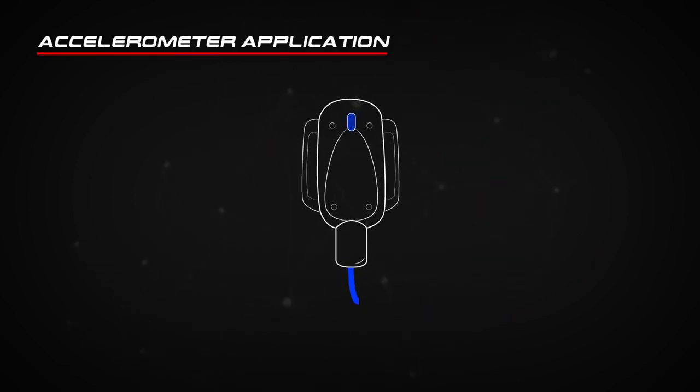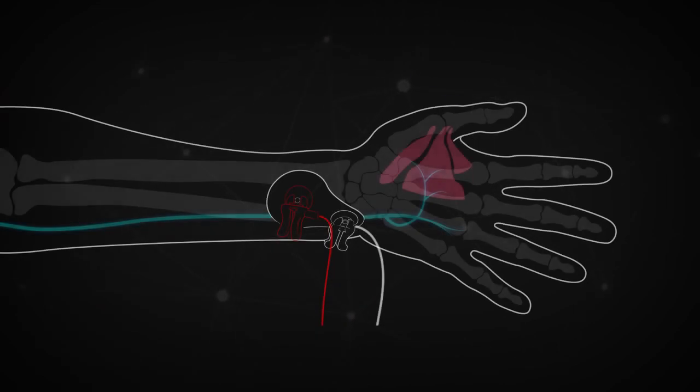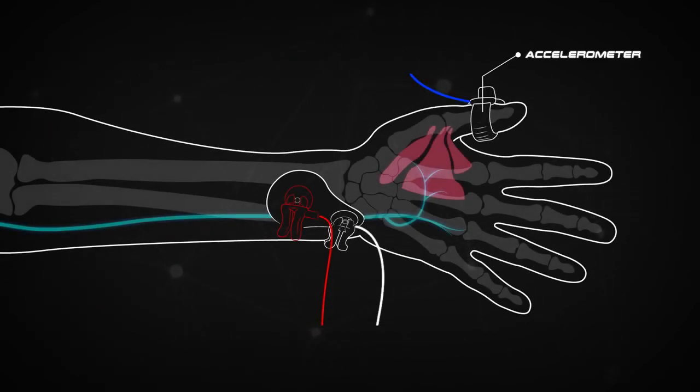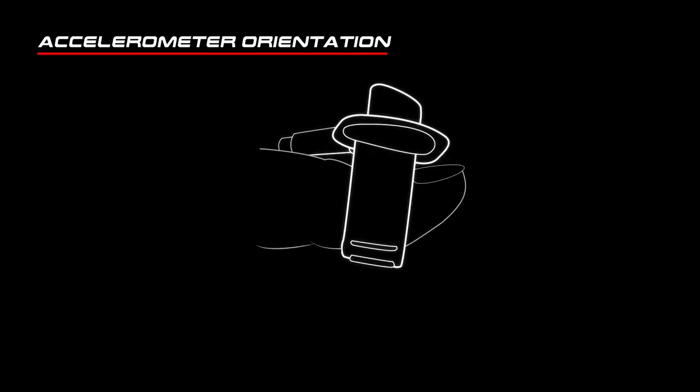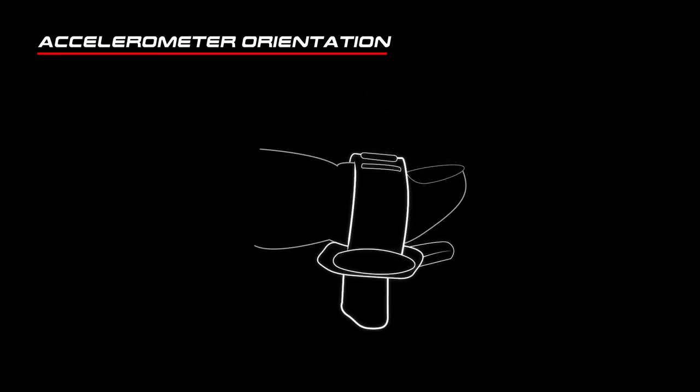Accelerometer application. Due to the fact that the ulnar nerve stimulation will contract the adductor pollicis, the accelerometer should now be applied to the patient's thumb. The accelerometer contains three-dimensional technology which allows for the accelerometer to be oriented in any way and therefore requires no calibration.